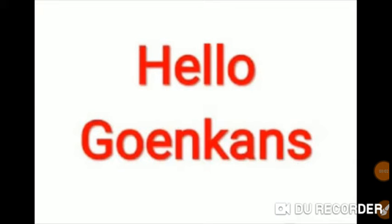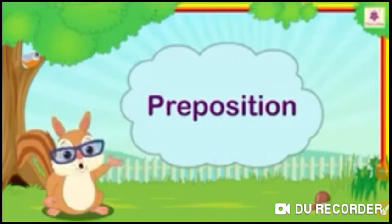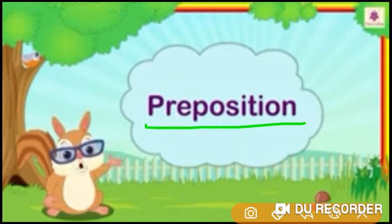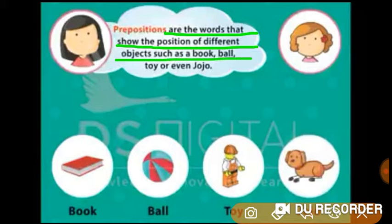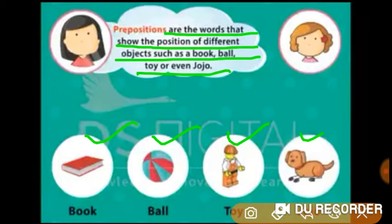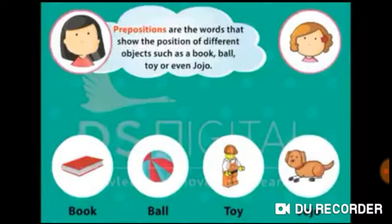Hello Koinkans! Today we are going to do revision of prepositions. Prepositions are the words that show the position of different objects such as a book, ball, toy, or even Choo Choo, a pet dog.